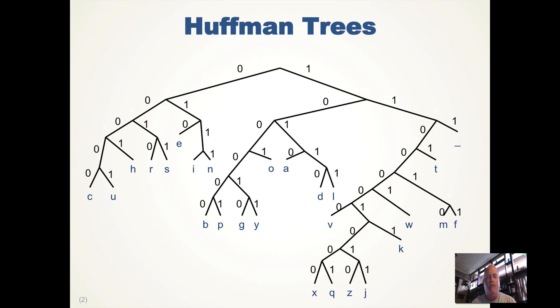Here's an example Huffman tree that encodes the lowercase letters and the space character based upon the frequency that these letters occur in English text.